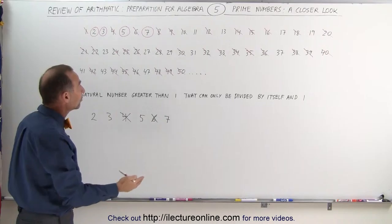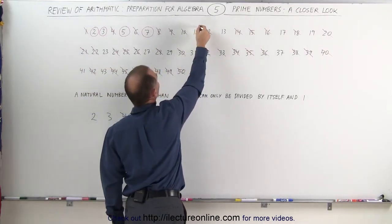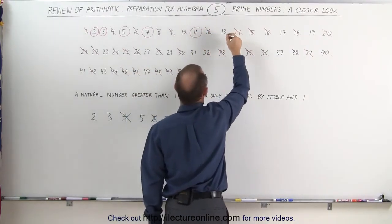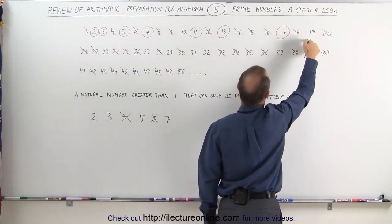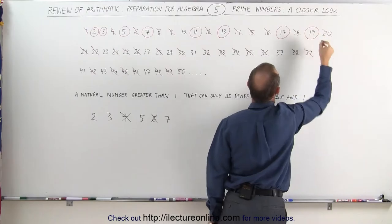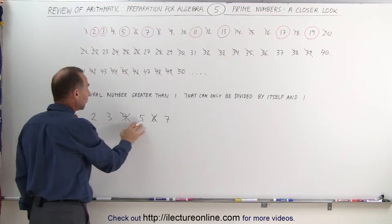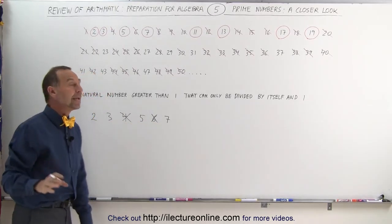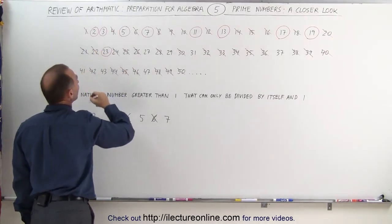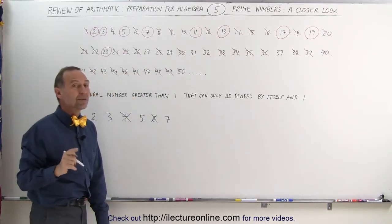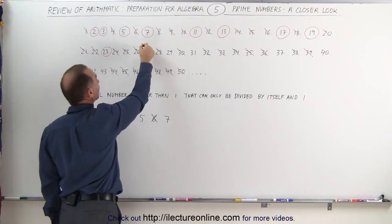I'll look at what's left and see if any of these numbers are prime. 11 can only be divided by 11 and itself — that's a prime number. 13 can only be divided by itself and 1. 17 can only be divided by 1 and itself. 19 can only be divided by 1 and itself. The number 27 — we missed one: 2 plus 7 is 9, and 9 can be divided by 3, so that's not a prime number.